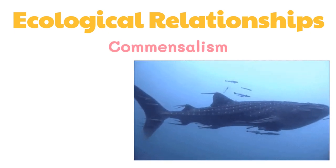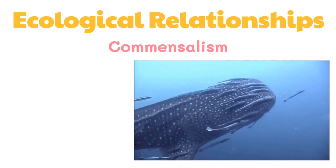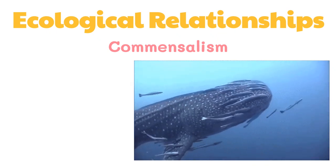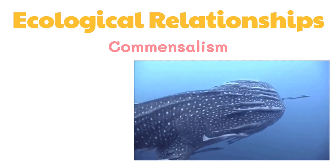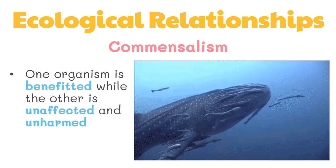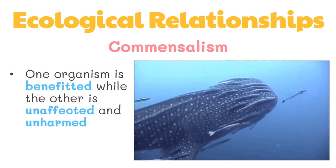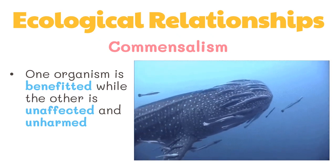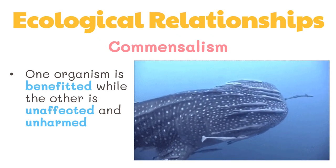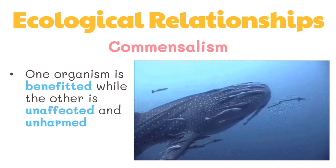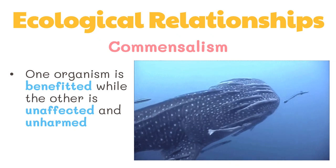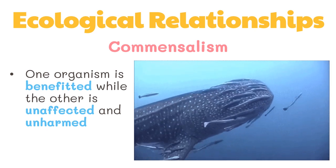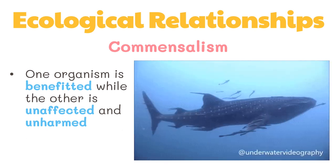A remora fish attaches itself to a shark and uses the shark for transportation, eating the food left over from the shark. This is called commensalism, where one organism is benefited while the other is not affected nor harmed — a positive-neutral relationship. The organism that gets the benefit is called the commensal, and it uses the host for transport, shelter, or protection.